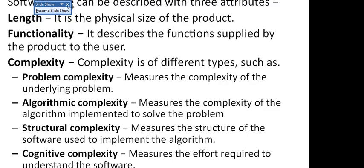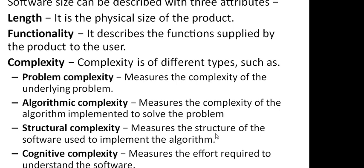Size can be measured in three properties: length, functionality, and complexity. Length is the physical size of the product. Functionality describes the functions supplied by the product to the user. Complexity is described in four parts: problem, algorithmic, structural, and cognitive. Problem complexity describes the depth of the underlying problem, algorithmic complexity describes how problems are solved step by step, structural complexity measures how the algorithm is implemented, and cognitive complexity relates to understanding the software product.